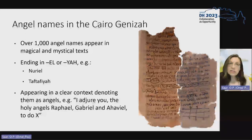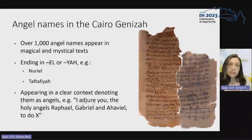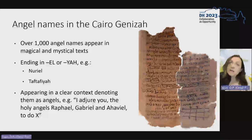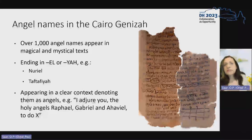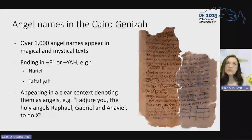Usually, angelic names in the Jewish magical tradition end either with the suffix 'el' or with the suffix 'yah'. Both are theophoric suffixes meaning God. So, for instance, you can have an angel name such as Nuriel, meaning the fire of God, or an angel name such as Tastafia. Other ways of recognizing these angels is by the context in which they appear — if I have a list of names as part of an appeal such as 'I adjure you, the holy angels, Raphael, Gabriel, and Ahaviel, to do a specific ritual,' I can say easily that Ahaviel is also an angel, even though he is less famous than Raphael and Gabriel, simply by the fact that he is part of a list of names.